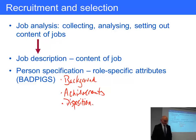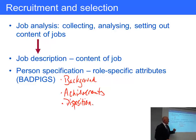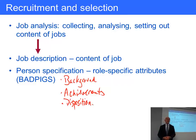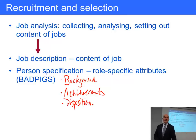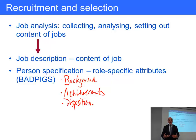D is for disposition — essentially looking at someone's personality. For example, if the job involves being alone much of the time, like an internal auditor out on their own investigating how different areas of the business conform to internal controls — and internal auditors are not always the most loved people, as there's a feeling they're there to check up on and criticise — then a very sociable person might not suit that role.